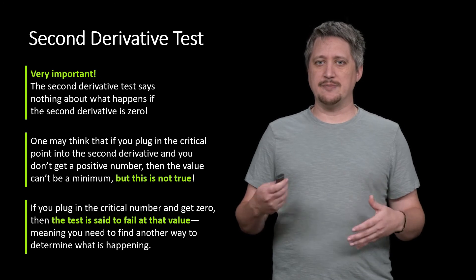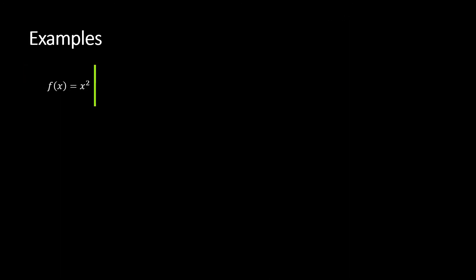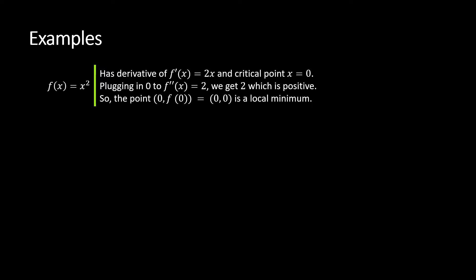Let's see a few examples. Consider f(x) = x². If we take the derivative, this gives us 2x, so that tells us we have a critical point at zero. Plugging in zero to the second derivative, the second derivative is just 2. So no matter what I plug in, I'm going to get 2, which is positive. So that tells me that point (0, f(0)) or just (0,0) is a local minimum, because the second derivative is positive.